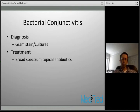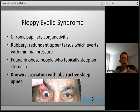Moving on to chronic papillary conjunctivitis — one condition you may encounter is floppy eyelid syndrome, which causes a chronic papillary reaction. It's characterized by rubbery, redundant upper tarsal tissue that everts with minimal pressure. During routine exam, if you have the patient look down and lift the eyelid, it almost everts right away — highly characteristic of floppy eyelid syndrome. Patients may not have impressive symptoms, but this is a good screening sign. It's typically found in obese or overweight patients who sleep on their stomach, where the eyelids contact the pillow, evert, and cause irritation.